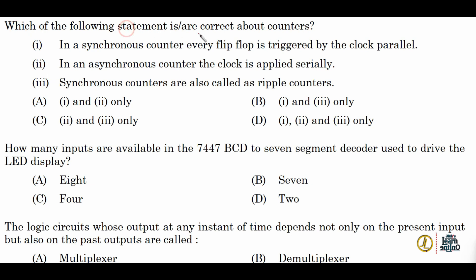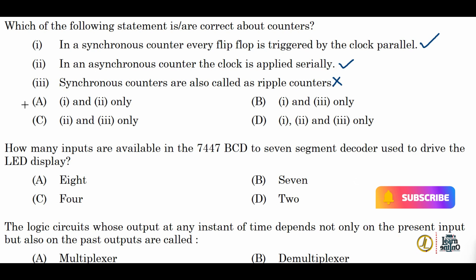Next: which statements are correct about counters? Statement 1: in a synchronous counter, every flip-flop is triggered by the clock in parallel — that is correct. Statement 2: in an asynchronous counter, the clock is applied serially — that is also correct. Statement 3: synchronous counters are also called ripple counters — that is wrong, because ripple counters are asynchronous counters. So the correct option is option A: statements 1 and 2 only are true.